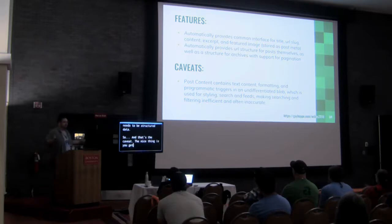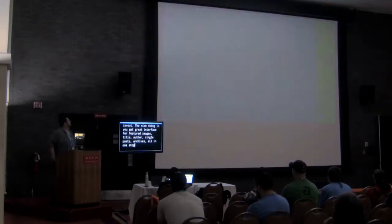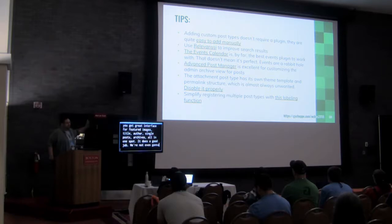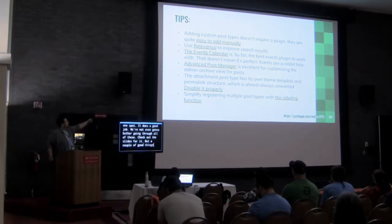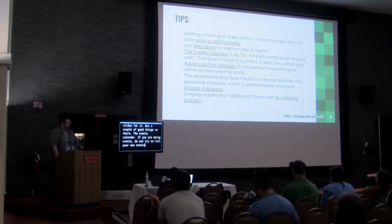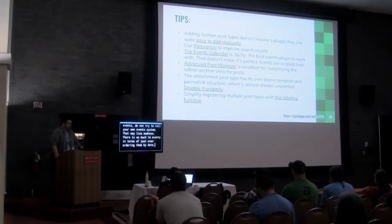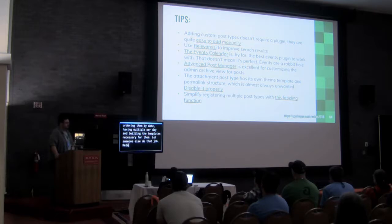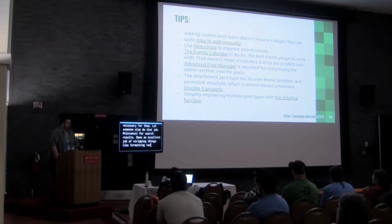The nice thing is you get a great interface for each of your images, title, and author all together — single posts, archives, all in one spot. On plugins: the Events Calendar — if you are doing events, do not try to roll your own events system, because there is so much involved in just ordering them by date, having multiple per day, and building the templates. Let someone else do that job. Relevanssi does an excellent job stripping formatting tags out of WP content and allowing you to add all your things into searches, making searching through posts very effective.